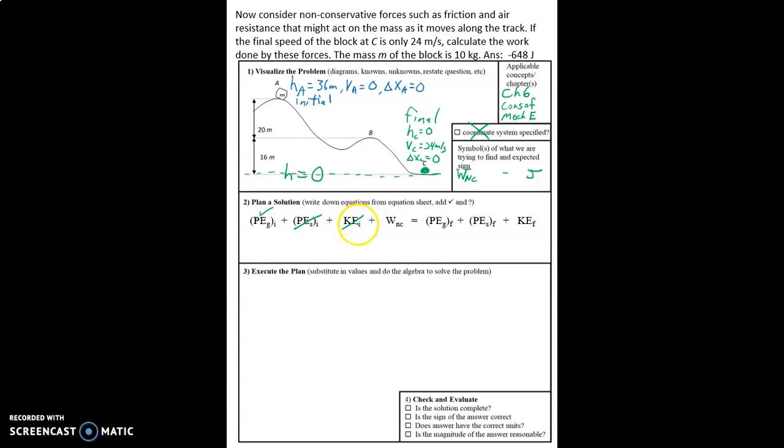There's no kinetic energy initial, because it starts from rest. At point A, there is going to be work by non-conservative forces, that's what we're trying to solve. The gravitational potential energy reference line goes right through point C.